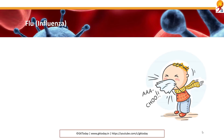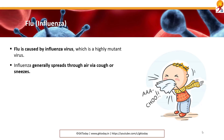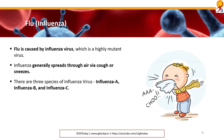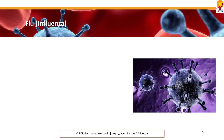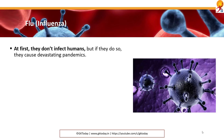First up is flu or influenza virus. Flu is caused by influenza virus, which is a highly mutant virus. It generally spreads through the year via cough or sneezes. There are three main species: influenza A, B and C. Out of them, influenza A infects birds and mammals. It has a very high rate of mutation, and this is the reason that so many different strains of influenza virus are found.